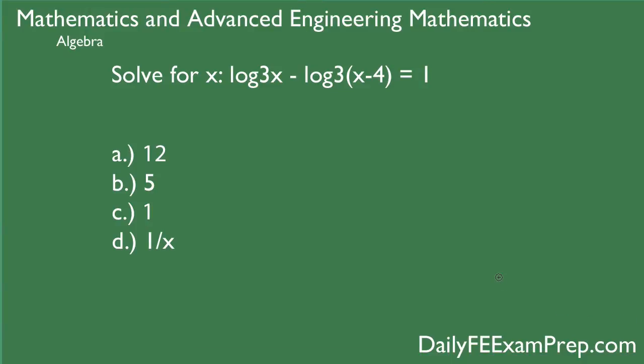The first thing that we're going to do is we are going to rearrange this based on the identity that I just showed you. So we know that if we've got the same base and we are subtracting those numbers, then we are actually going to have log base 3 of x over (x-4) equals 1. That's again using the logarithmic property on page 19.